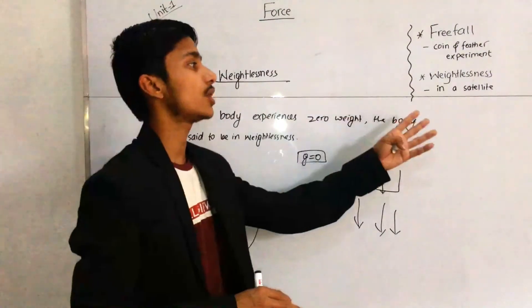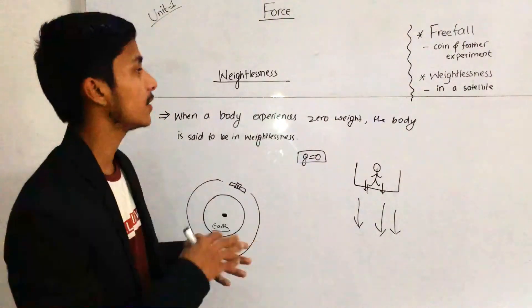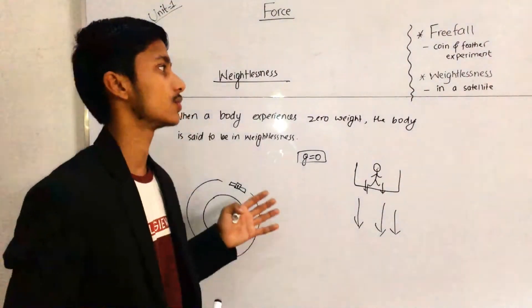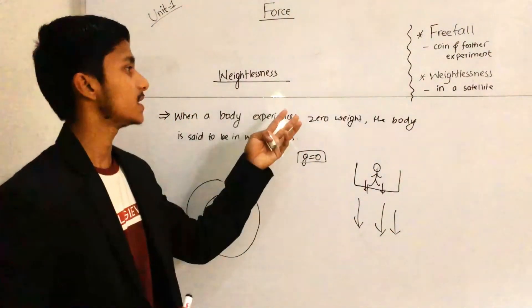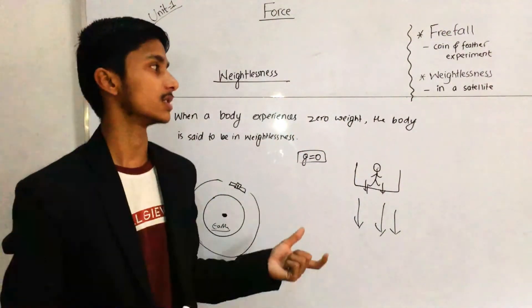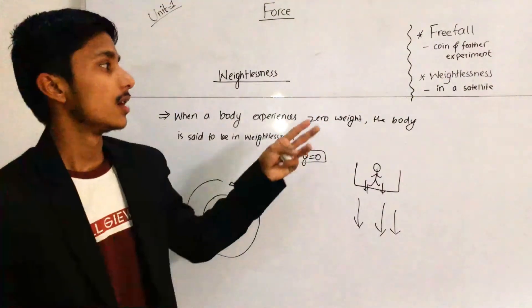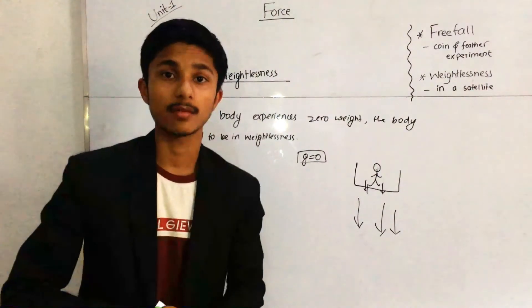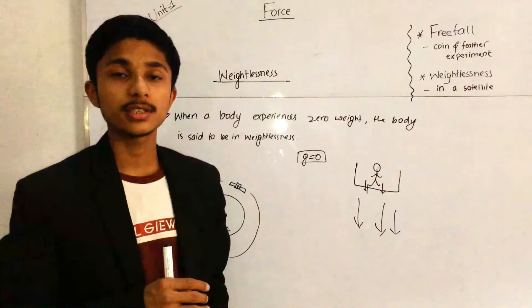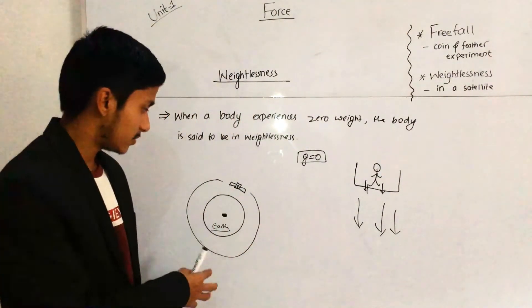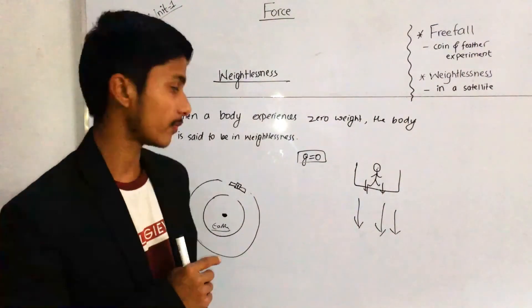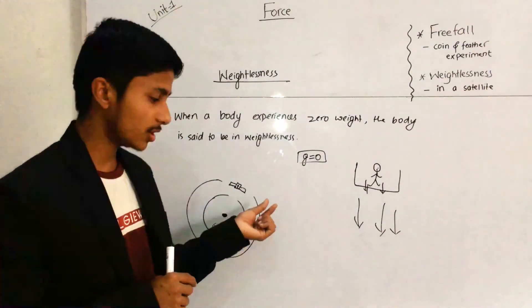We have now completed the two topics: free fall and weightlessness. Under free fall, we discussed the coin and feather experiment and its conclusion. Under weightlessness, we discussed the definition and weightlessness in a satellite. Now we discuss one question: why does a satellite not need any force or energy to revolve around the Earth?